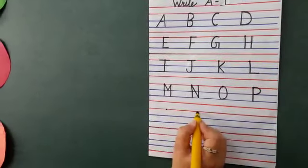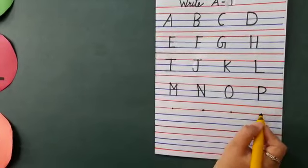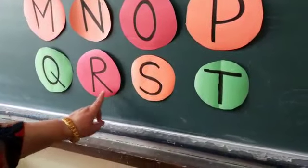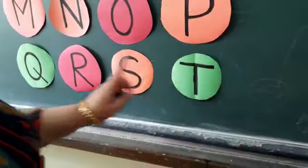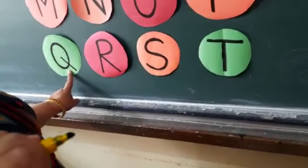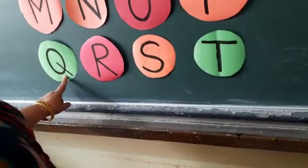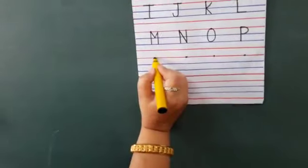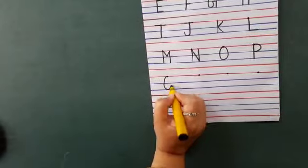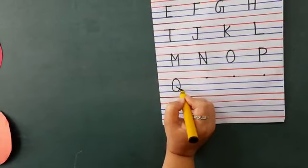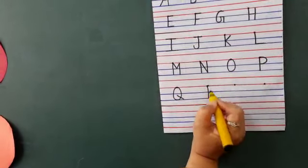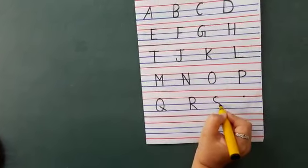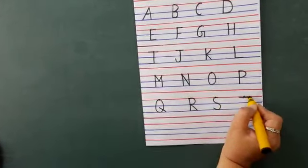Which is next line? Q, R, S, T. Okay. This is Q. Nobody will say 'kyao'. Nobody will say 'kyao'. No. Q. Q. Q like this. Q, R, S, T.